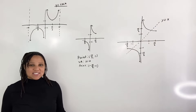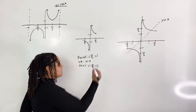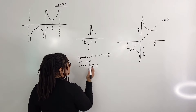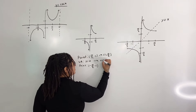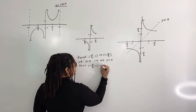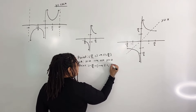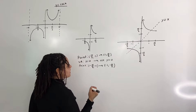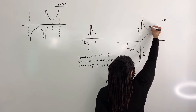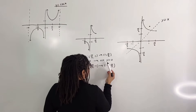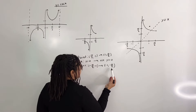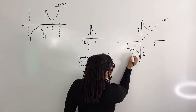We have a point at negative pi over 2, negative 1, so for the inverse it will become negative 1, negative pi over 2. There will be a horizontal asymptote at y equals 0. We have the point 1, pi over 2 here. And we have another point at negative 1, negative pi over 2, which is about right here.